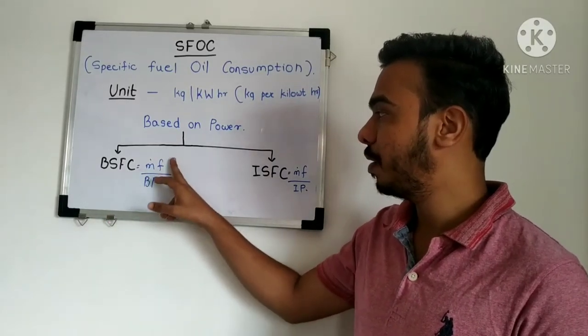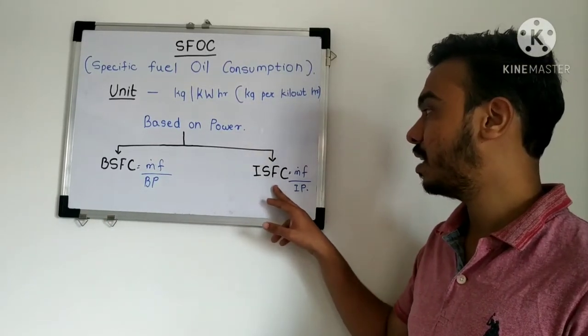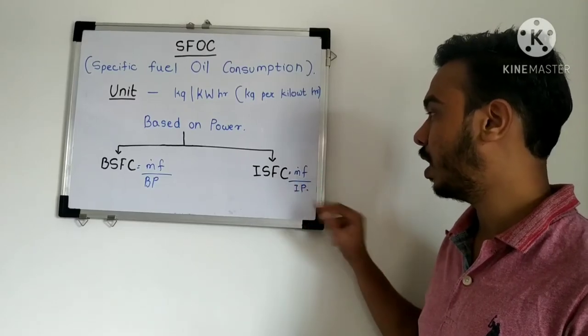BSFC formula is MF upon BP. ISFC formula is MF upon IP.